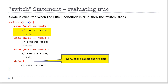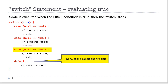Here we have case num1 equals equals num2 colon. If this condition is true, we will execute the code. We also need to place the break statement after that to break out of the switch. If this is not true, we go on to the next case. We evaluate that condition — if that condition is true, the code is executed and we break out of the switch. If it is not true, we go on to the next case, and the next case. If none of the above evaluate to true, then the code after the default keyword will be executed.